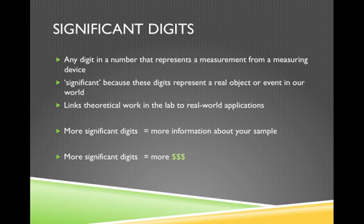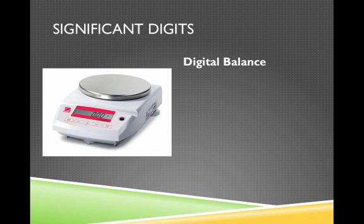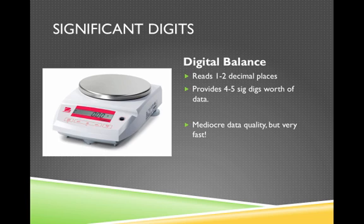This is a device you're going to see a lot of this year — something known as a digital balance. We use these very commonly. Digital balances read one to two decimal places, as you can see in the picture on the left, and with the whole numbers they provide somewhere in the vicinity of four to five significant digits. That's actually pretty good. The real advantage of a digital balance is that it's super fast — it gets you that information in about a second. If you wanted one of these for yourself, they'd cost you somewhere in the vicinity of $350 a piece, due to the precision instruments, calibration, and finely-made mechanics involved.